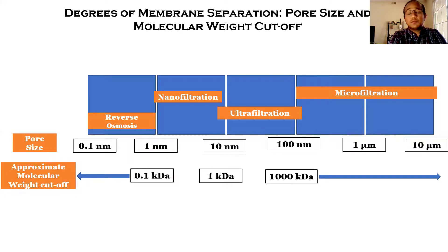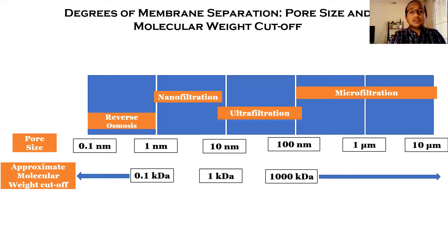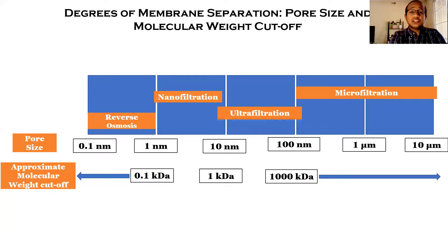The third type of membrane is ultrafiltration. The pore size of these membranes ranges from 10 nanometers to 100 nanometers, and the molecular weight cutoff ranges from one kilo Dalton to 1000 kilo Dalton. These membranes are typically used as pre-treatments for RO membranes, and are generally used to remove colloids, proteins, biological contaminants, and larger suspended or dissolved solids from the feed water.